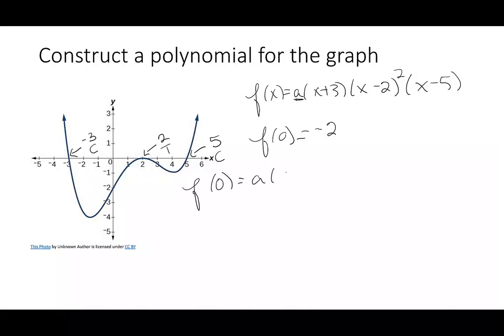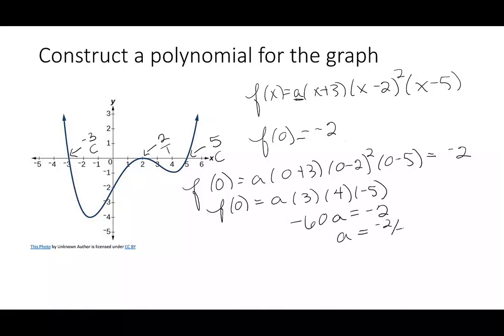So if I plug in 0, I get a times (0 plus 3), (0 minus 2) squared, and (0 minus 5). This is supposed to be equal to negative 2. So f(0) is a times 3 times 4 times negative 5. 3 times 4 times negative 5 gives me negative 60 times a is negative 2. So a is negative 2 over negative 60, which gives me 1 over 30.